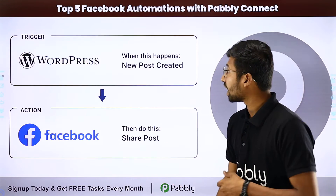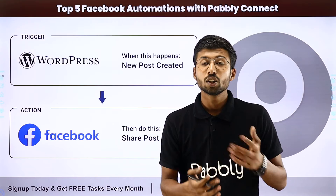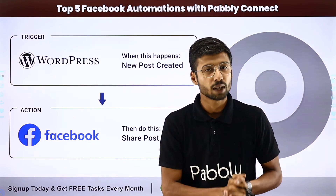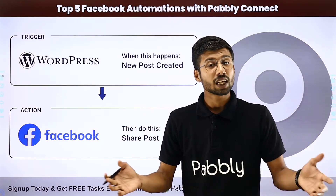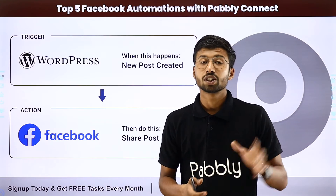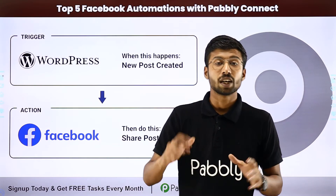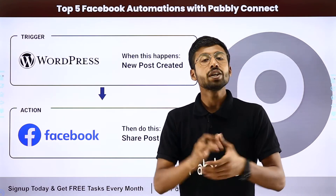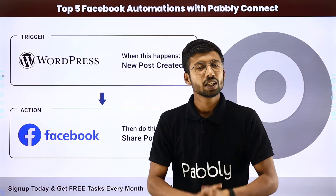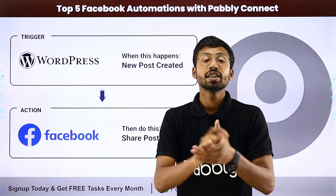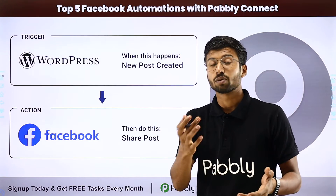The next automation is for WordPress and Facebook. Whenever you create a new blog post on your WordPress site, that blog will automatically be shared on your Facebook page as well. For example, if I'm a blogger posting daily to WordPress and I want my Facebook community to get updated about each new blog, this automation handles the entire process — every new WordPress post is automatically shared to my Facebook page.